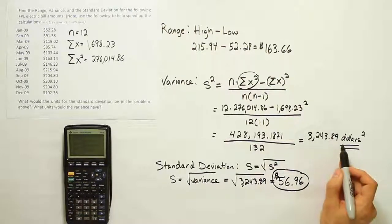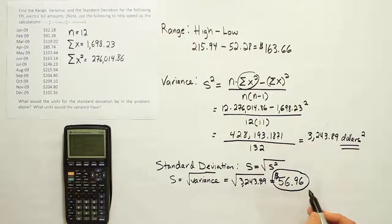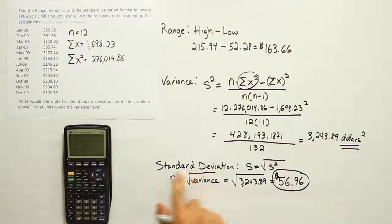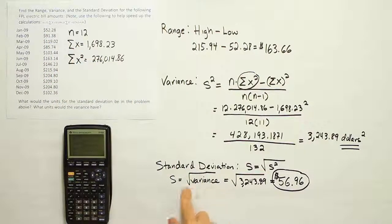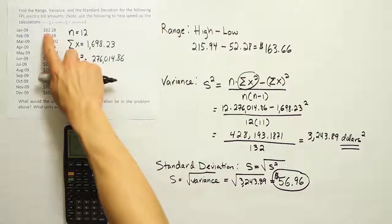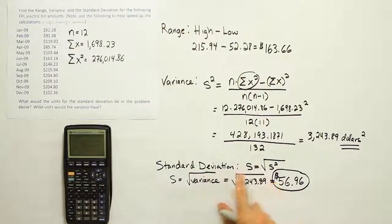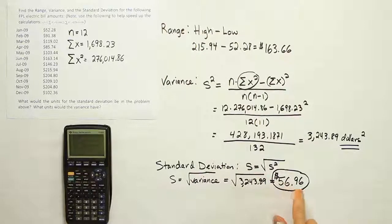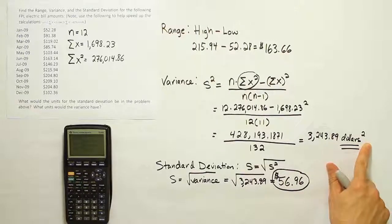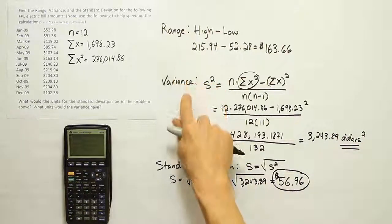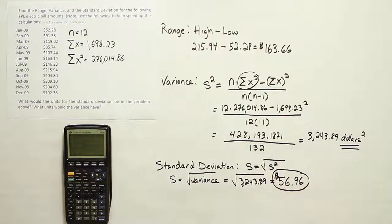So remember, if the units for variance were dollars squared, when you take the square root, you'll remove the square, and it'll just be dollars again. So this is another thing that's nice about standard deviation, is that the units that we started with will be the units that standard deviation has always. So if the data was given in dollars, then the standard deviation will also be in dollars. And that's a nice property. I can understand 56.96 dollars. I know what that is. I don't know what a dollar squared is. That's confusing. So we've calculated our range, our variance, and our standard deviation. And we've expressed the units for each calculation here. And that's it.